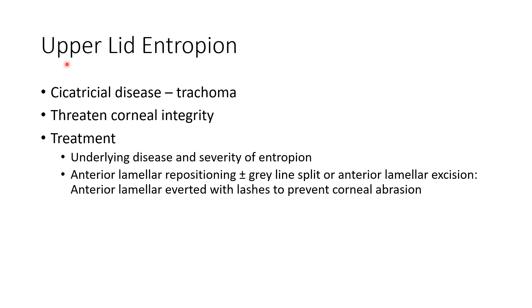Now let us discuss about upper lid entropion. It is usually seen in cicatricial diseases like trachoma and also affects corneal integrity. The treatment of upper lid entropion depends on underlying disease and severity. Anterior lamellar repositioning plus or minus gray line split, or anterior lamellar excision can be done — the anterior lamella is averted with lashes to prevent corneal abrasion. If you have any suggestions, please let me know in the comments section. For more such videos, please check out my playlists. Thank you.